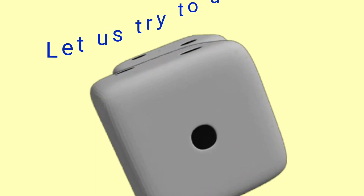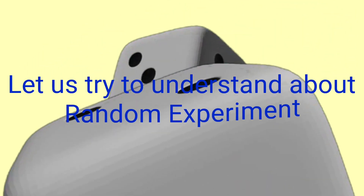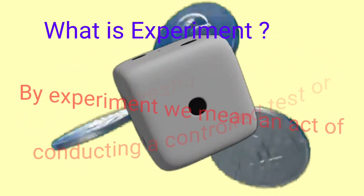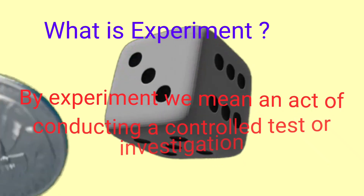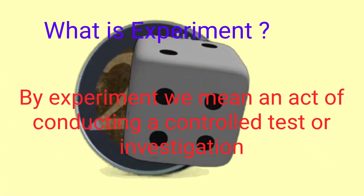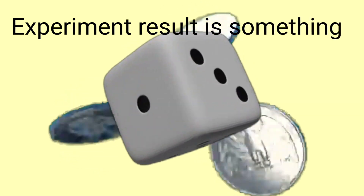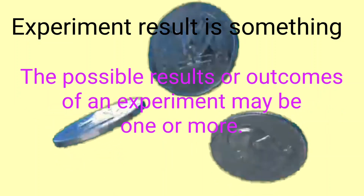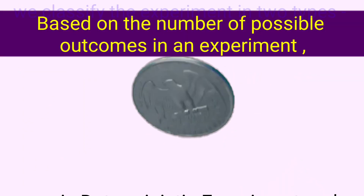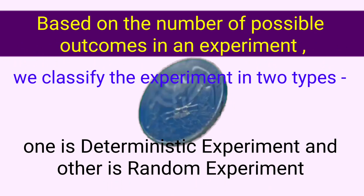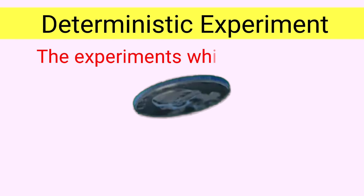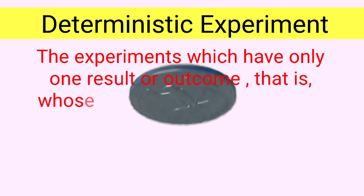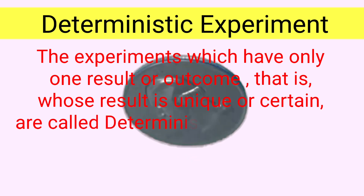Now let us try to understand what is a random experiment. Before defining random experiment, we first have to know what is an experiment. By experiment we mean an act of conducting a controlled test or investigation. The possible results of an experiment may be one or more. Experiments which have only one possible outcome — whose result is unique or certain — are called deterministic or predictable experiments.